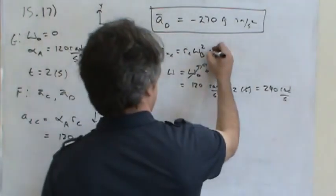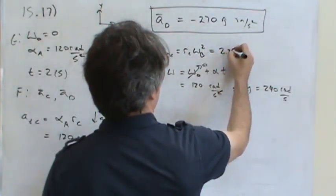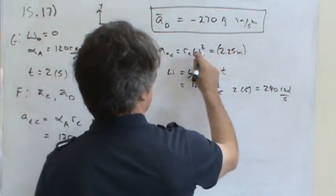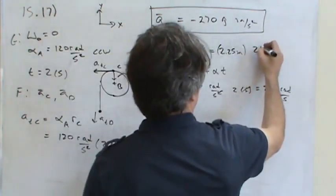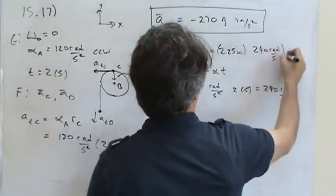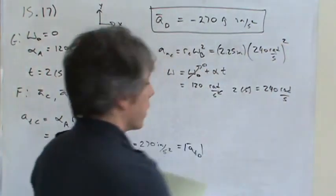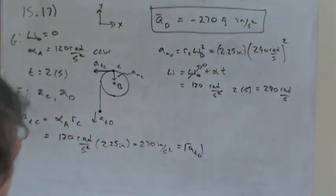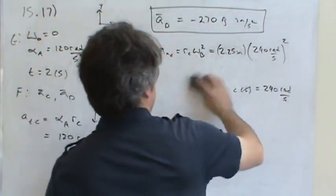So now plugging that in, two and a quarter inches of radius multiplied by 240 radians per second quantity squared will give us the normal acceleration of point C.